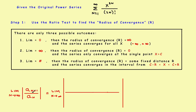So the first step is to use the ratio test to evaluate this series. The way the ratio test works: the denominator is the original function, and the numerator is just the original function with all the n's replaced with n+1. So the denominator is going to be x to the 3n divided by 2n factorial — just your original function.